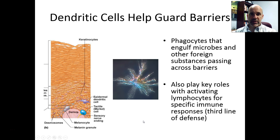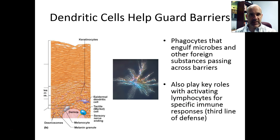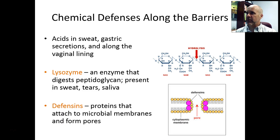When we get to Chapter 13, we'll see that dendritic cells are also really important for stimulating or activating lymphocytes — the white blood cell warriors of the third line of defense.